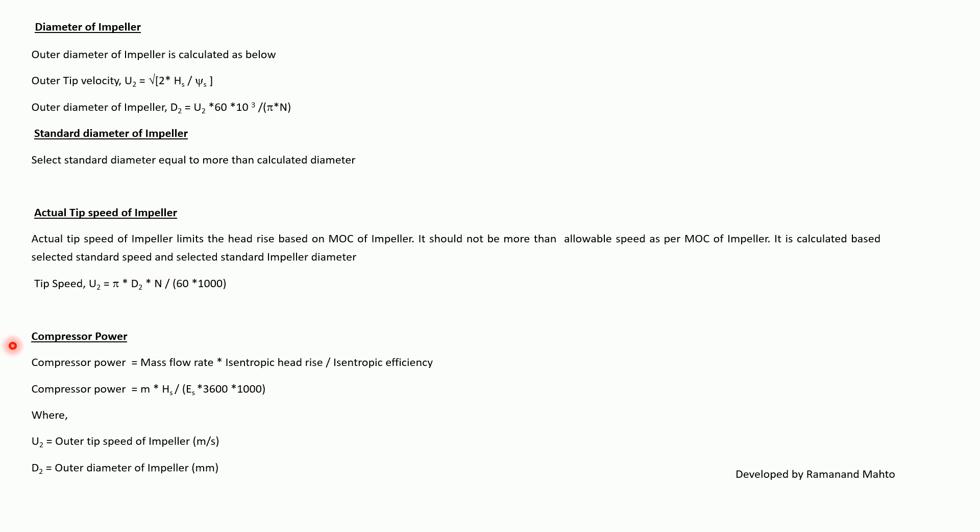Compressor power is equal to mass flow rate multiplied by isentropic head rise divided by isentropic efficiency. Compressor power = M × HS / (ES × 3600 × 1000), where U2 is the outlet tip speed of the impeller in m/s and D2 is the outlet diameter of the impeller in millimeters.